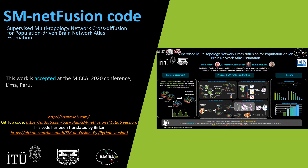Hi! In this video, I will show you how to use our SMNet Fusion, which is a supervised network cross-diffusion based on graph-to-projectal measures for estimating a representative and discriminative brain network. This work is published and selected as a presentation at the MICCAI 2020 conference. Our code is implemented in MATLAB by myself, Islam Mehiri, and translated to Python by Birkan Ak.